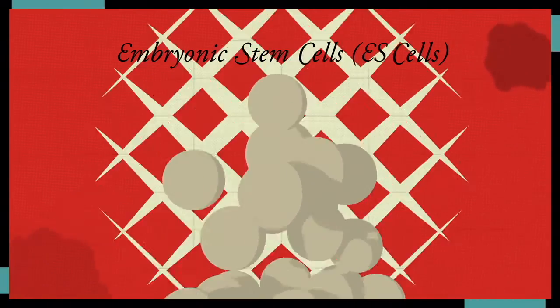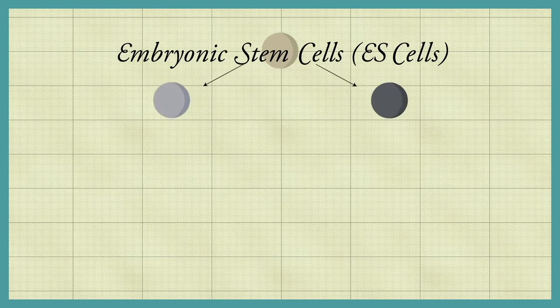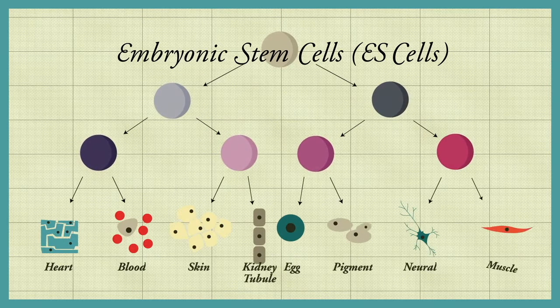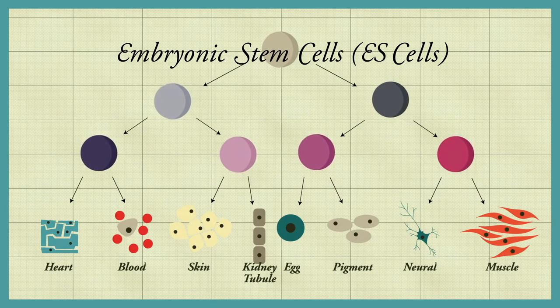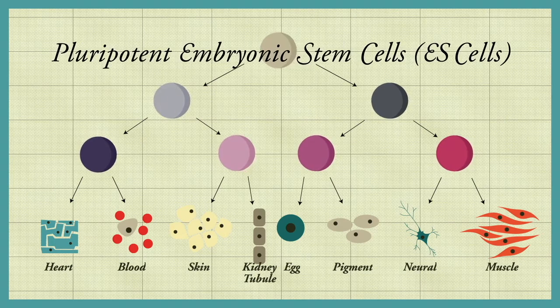Like cells in a developing embryo, ES cells retain the ability to form any type of cell in the adult body. Thus, ES cells are said to be pluripotent.